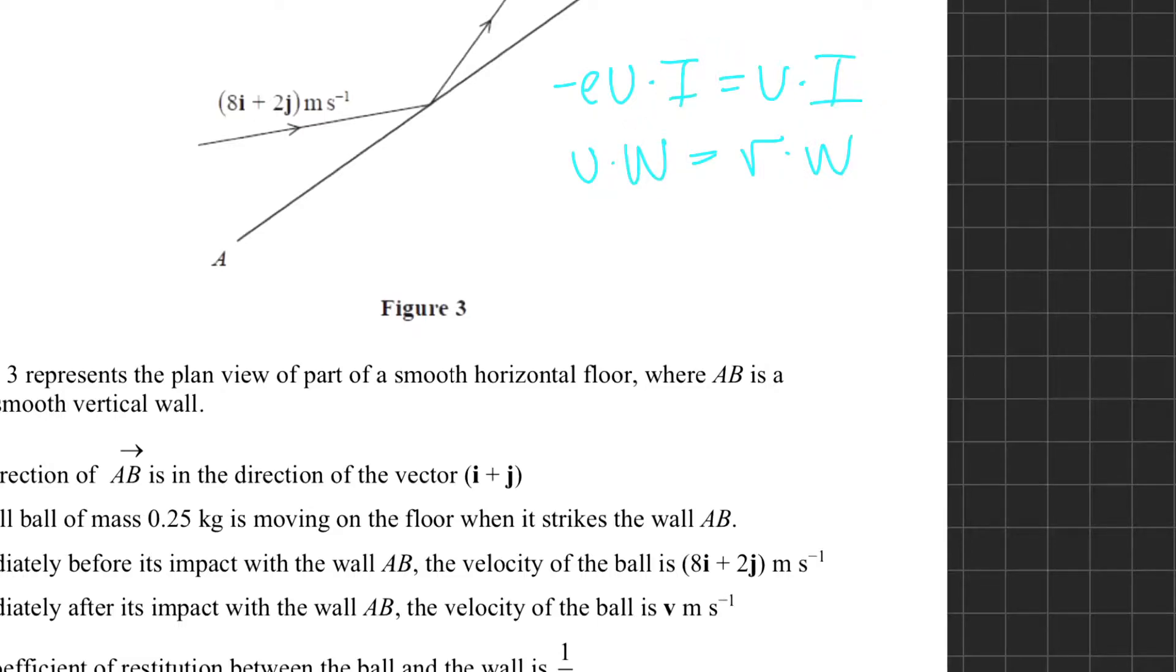The i and w are the vectors for the impulse and the wall. The impulse vector is just any vector parallel to the impulse, and it can be any multiple because they cancel out. The w vector is just any vector parallel to the wall, and we're told here that AB is in the direction (1,1), so the wall vector must be (1,1).